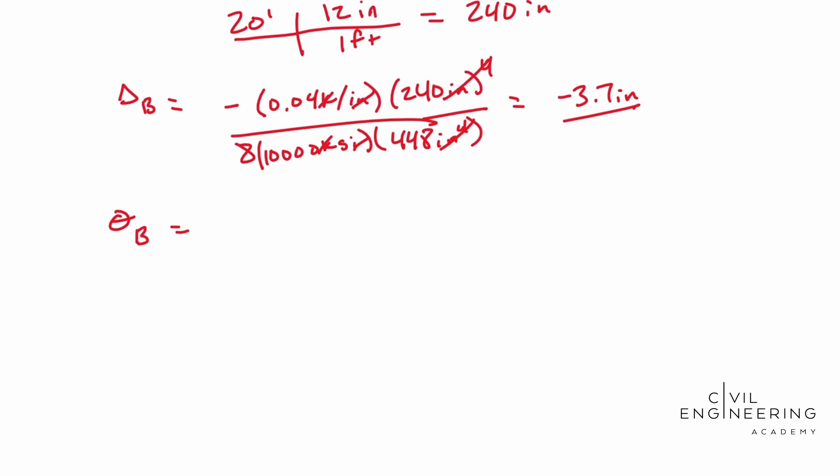It's on the same page. That's going to be WL cubed over 6EI. And so you end up with negative 0.04 kips per inch times, I almost forgot it, 240 inches cubed over 6EI.